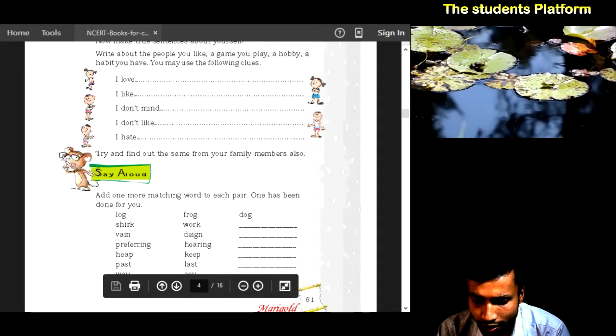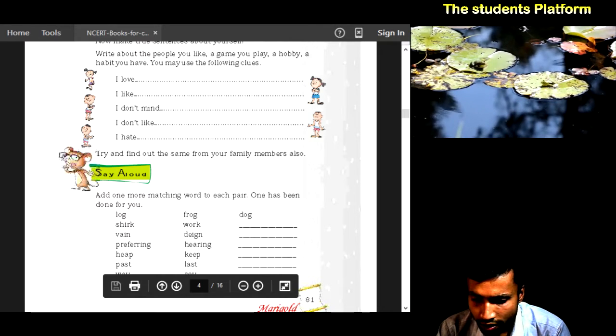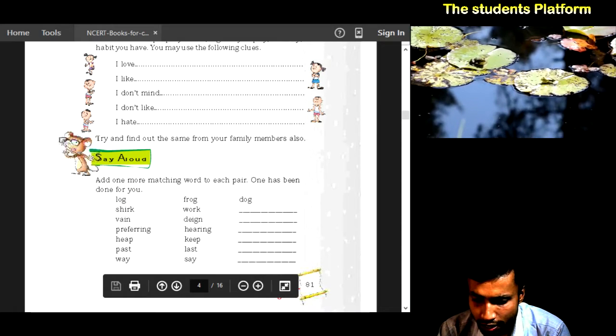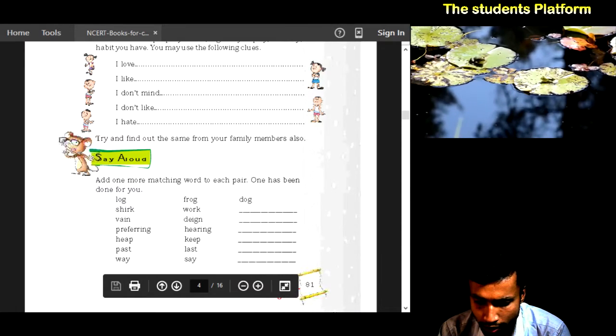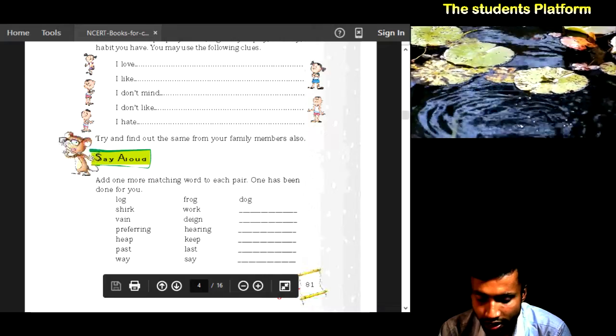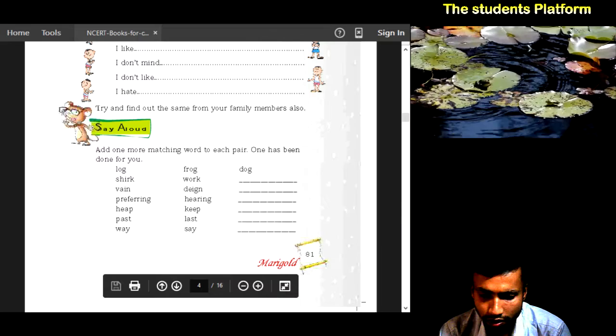This is for rhyme. What rhymes with dog? Frog, dog. Aardvark. Vane, dane, crane. Preferring, hearing, wondering, screaming - it will be better. Keep, jeep. Past, last, vast. Way, say, hey. This way you can make it.